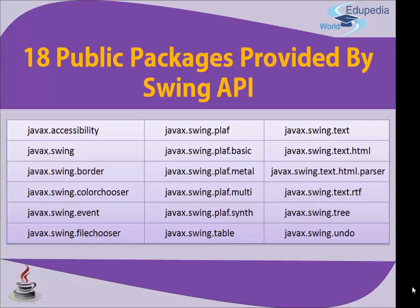Now I will go through them one by one and elaborate a bit about each package. First is javax.accessibility, then javax.swing, then javax.swing.border. As you can see, the sub-package name indicates that borders will appear with swing. The main package holder is javax.swing, and javax.accessibility covers all accessibility-related functionality available with swing.